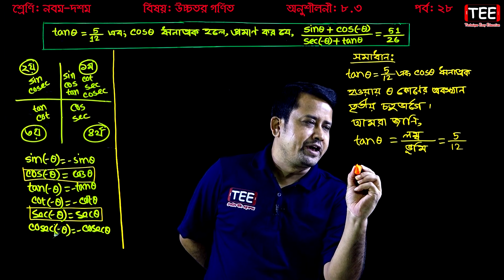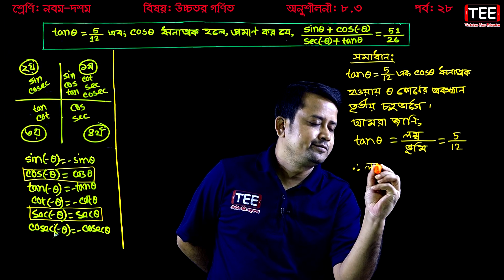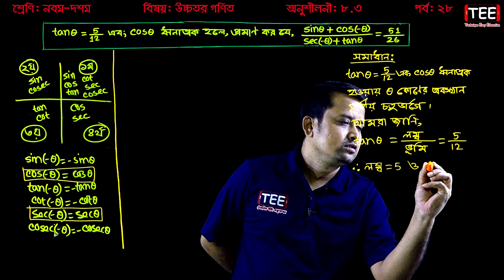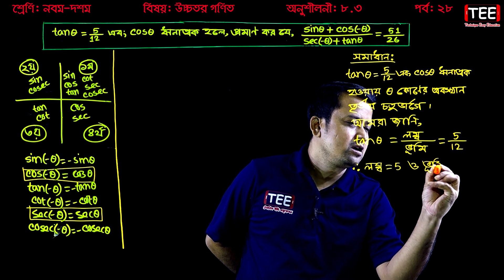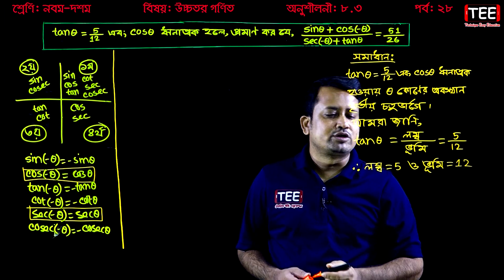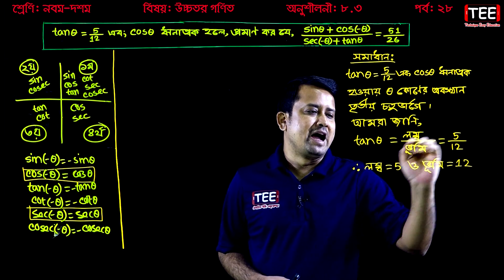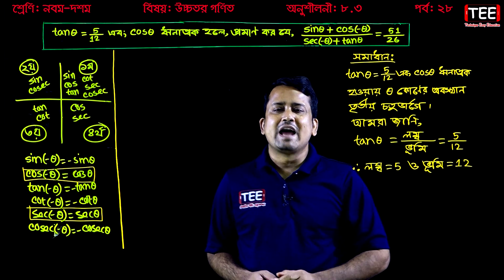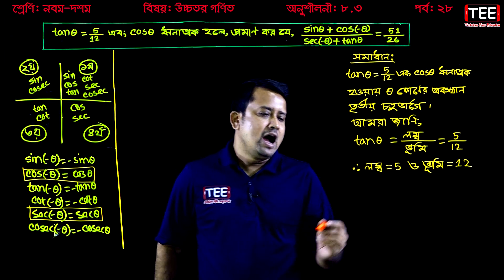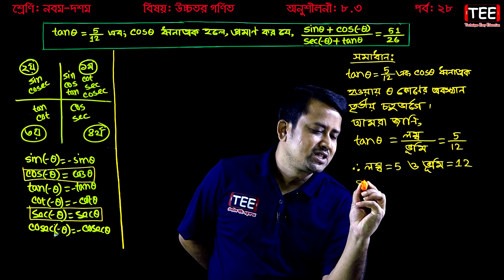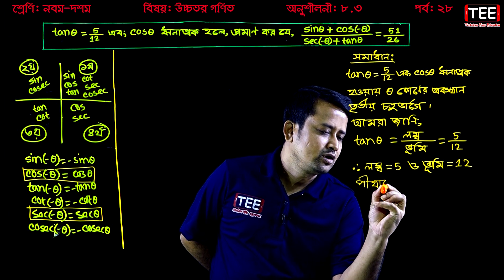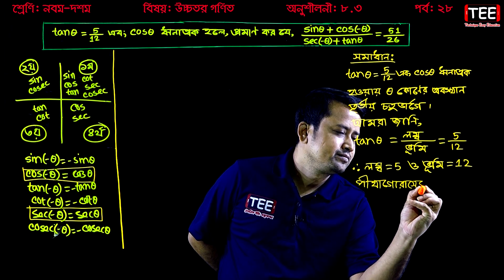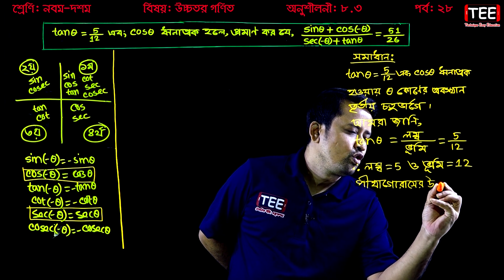So, I'll write it as lombo equal to 5 and bhoomni equal to 12. So lombo is 5, and bhoomni is 12. So lombo equal to 3.